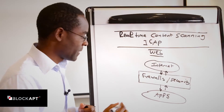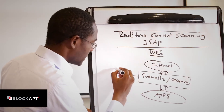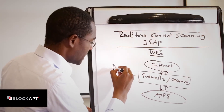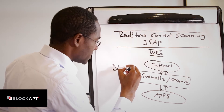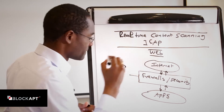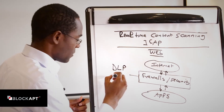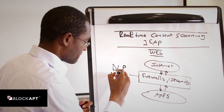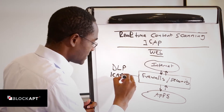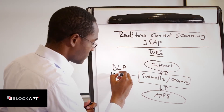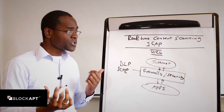Why are we going to do that? We want to provide what we call DLP — data leakage prevention. One of the protocols that offers that is called ICAP, the Internet Content Adaptation Protocol.